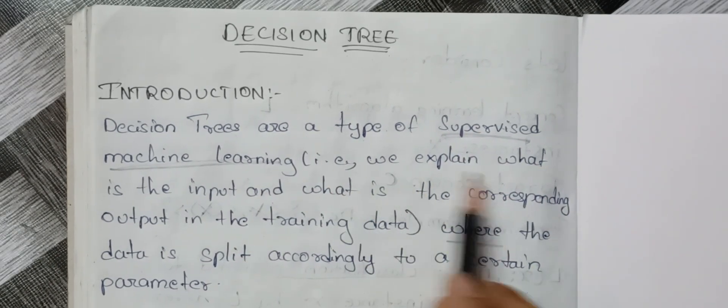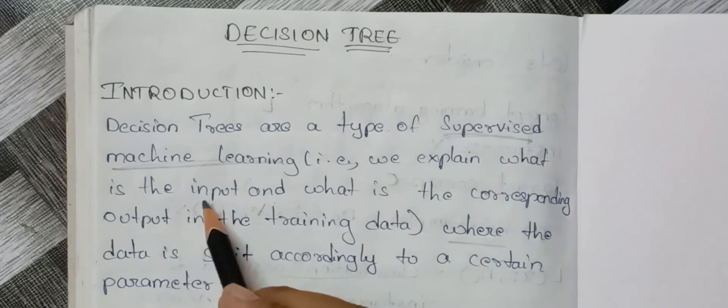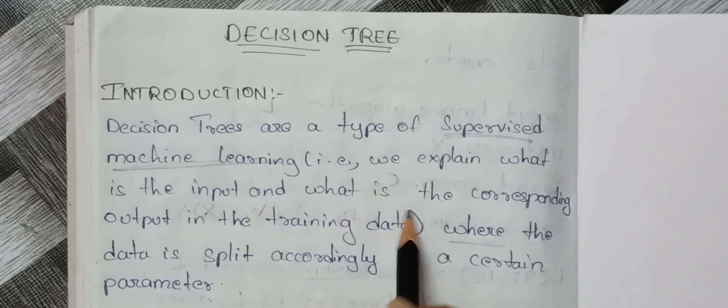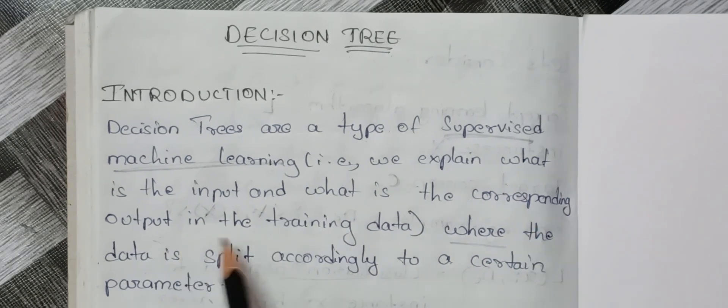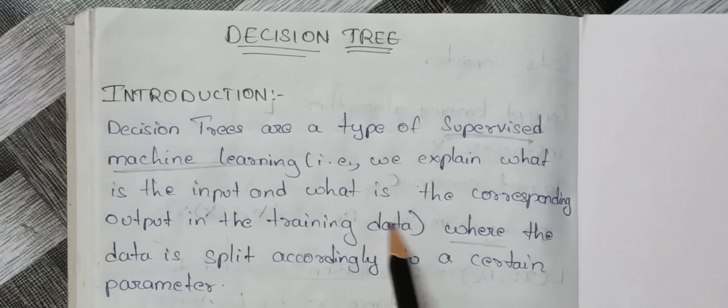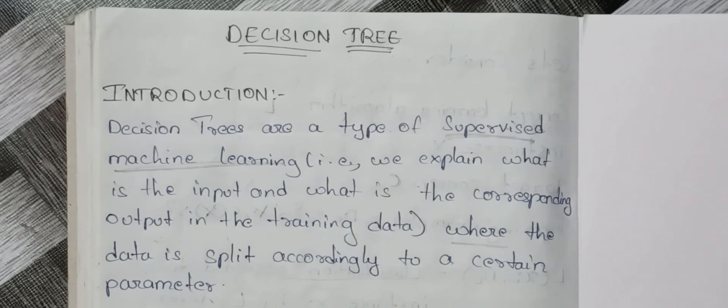In supervised machine learning, we explain what is the input and what is the corresponding output in the training data.